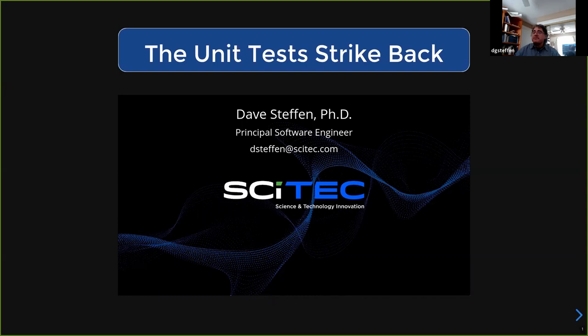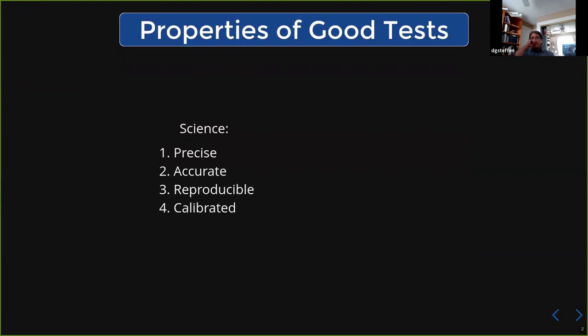So if we go back — under ideal circumstances, what does a good unit test have? From a science point of view, it's pretty much just the thing you'd like in an experimental setup in a lab. You want it to be precise — it tells you very precisely what failed. You want it to be accurate, so it doesn't give you false alarms. You want your results to be reproducible, so you don't want flaky tests. And you want to calibrate your tests — you occasionally spend time testing your testing framework itself.